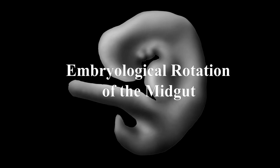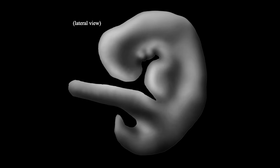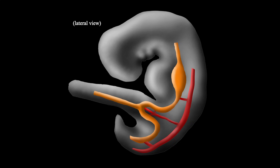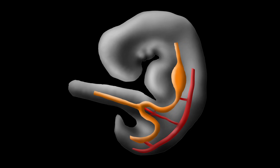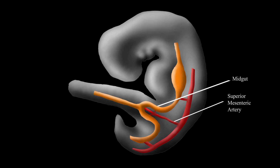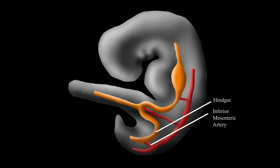This is a brief overview of the embryological rotation of the mid-gut. Arterial blood to the gut tube is supplied by the abdominal aorta. The gut tube is composed of the foregut, with blood supply from the celiac artery, the mid-gut, with blood supply from the superior mesenteric artery, and the hindgut, with blood supply from the inferior mesenteric artery.